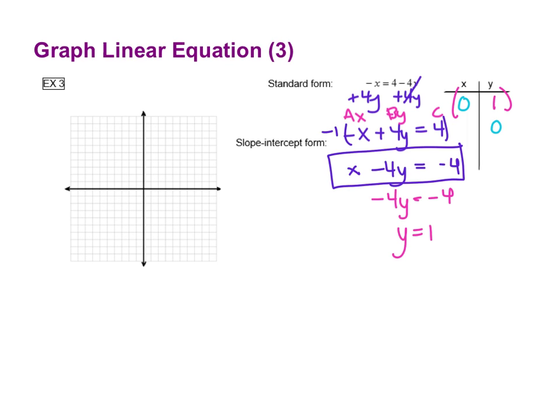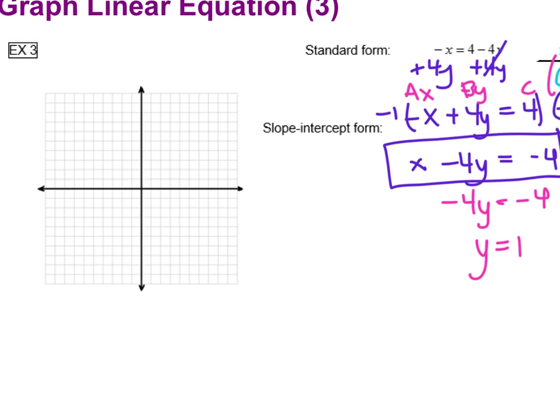The other one, make your y value a zero, leaves you with x equals negative 4. Well that's already solved. So your x is a negative 4. So those are our two ordered pairs for our intercepts.